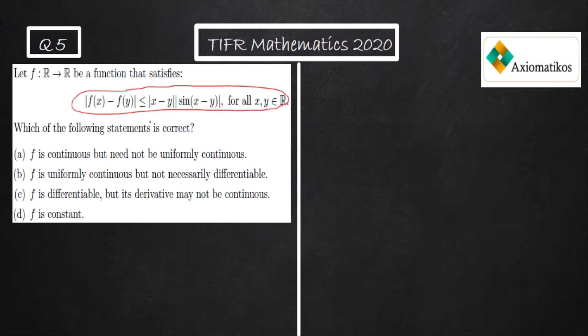Now we want to check whether the function is continuous, uniformly continuous, differentiable, if the derivative is continuous or not. Now from this equation, see it properly. Because of this sine function, we can think of the sandwich theorem. Let us proceed.